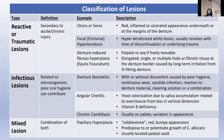Infectious lesions include denture stomatitis, which can be related to microorganisms or poor oral hygiene, and angular cheilitis — like a yeast or chronic candidiasis. Then you can have mixed lesions — a combination of physical injury and bacteria infiltrating the ulcer.